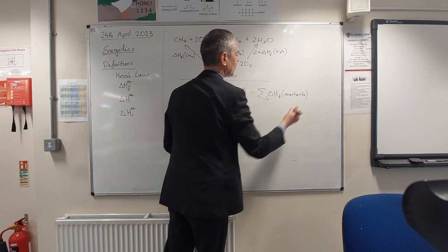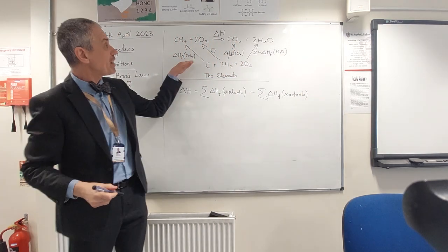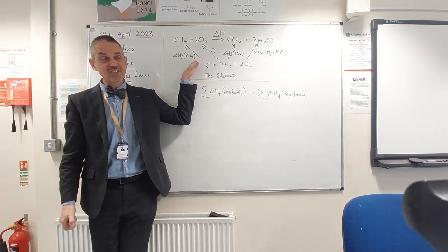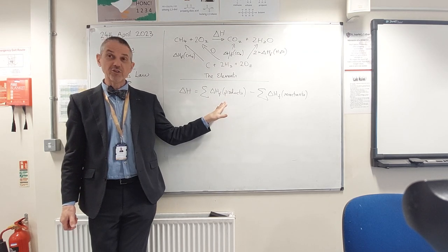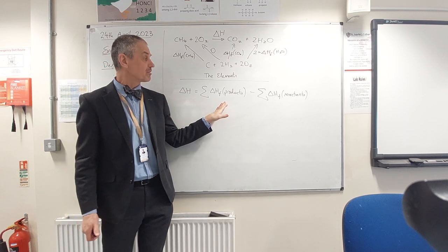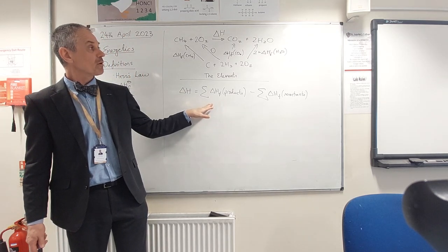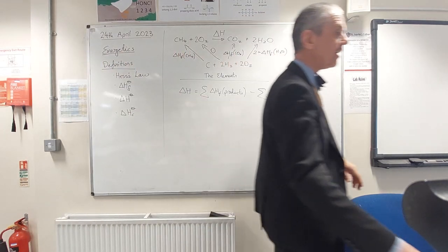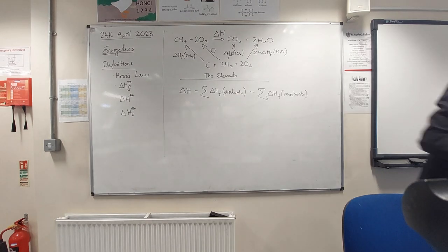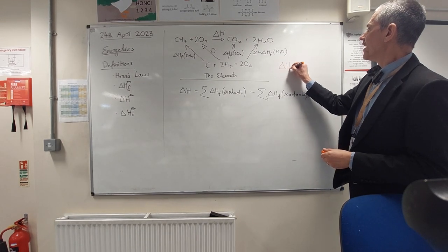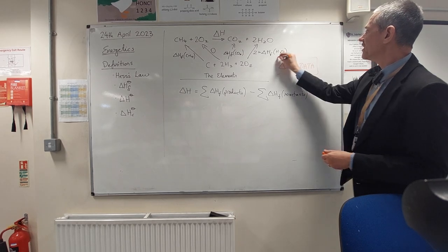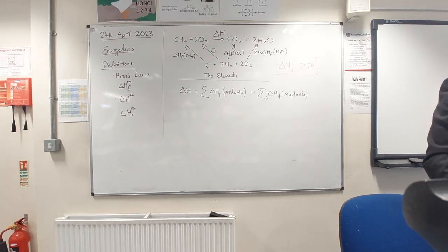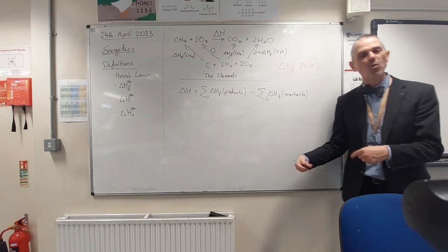And then delta H for that reaction is the sum of all the delta Hfs of products minus reactants. So you should be able to build up a Hess cycle if the question requires it, or just trot out the equation if that's the most convenient. But remember all of this is based on you being given delta Hf data. It's the data that determines how you work out the question, not what you are working out.